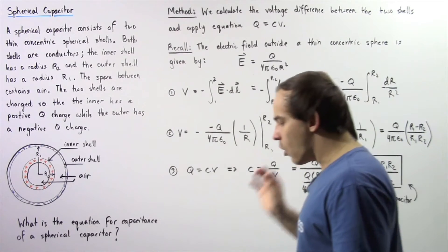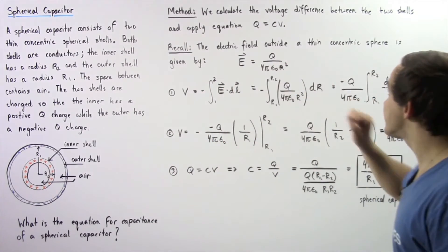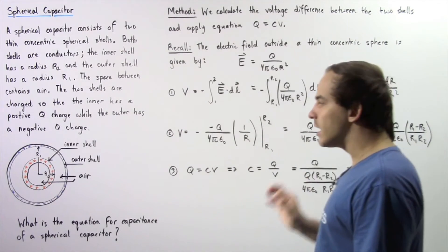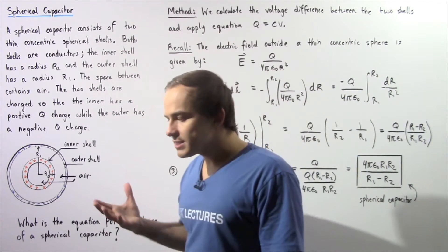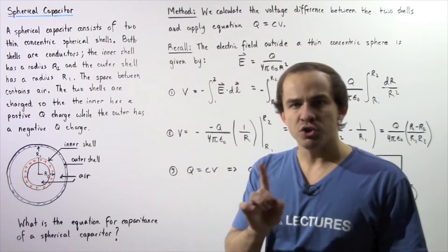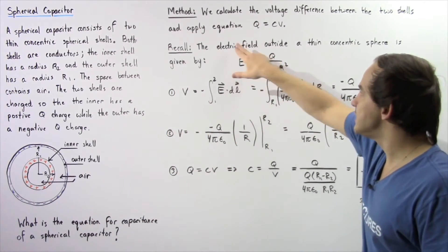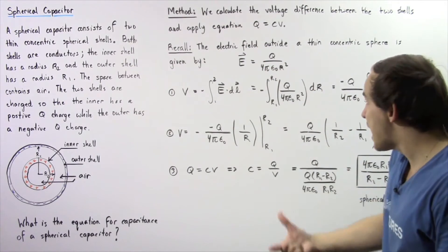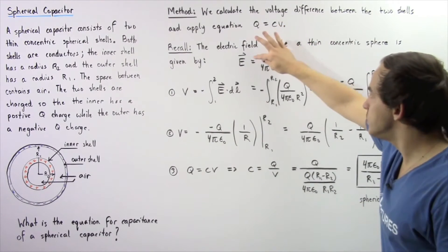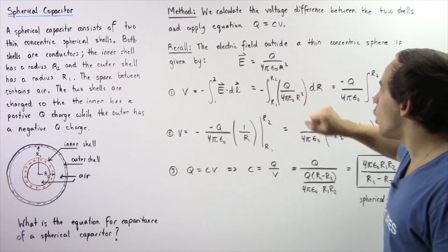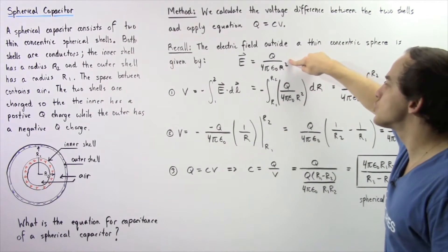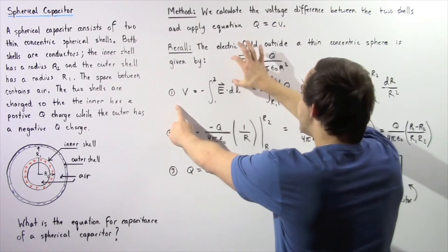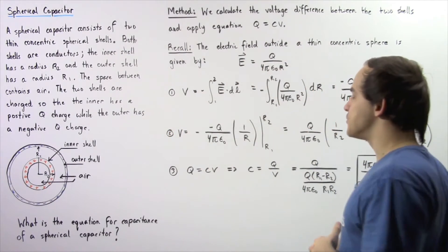Let's begin by recalling the electric field outside a thin concentric shell that is assumed to be a conductor. In a previous lecture, we were able to show using Gauss's law that the electric field outside a thin concentric shell is equal to Q divided by 4π epsilon naught multiplied by the radius squared. We're going to use this equation and result to calculate the voltage.